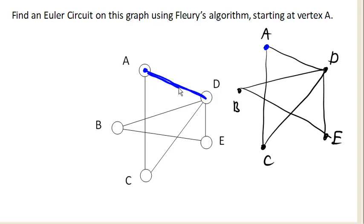So A to D is not going to disconnect the graph, so we'll go ahead and add that in as our first step. Now over here, in our duplicate copy, we're going to delete that edge.